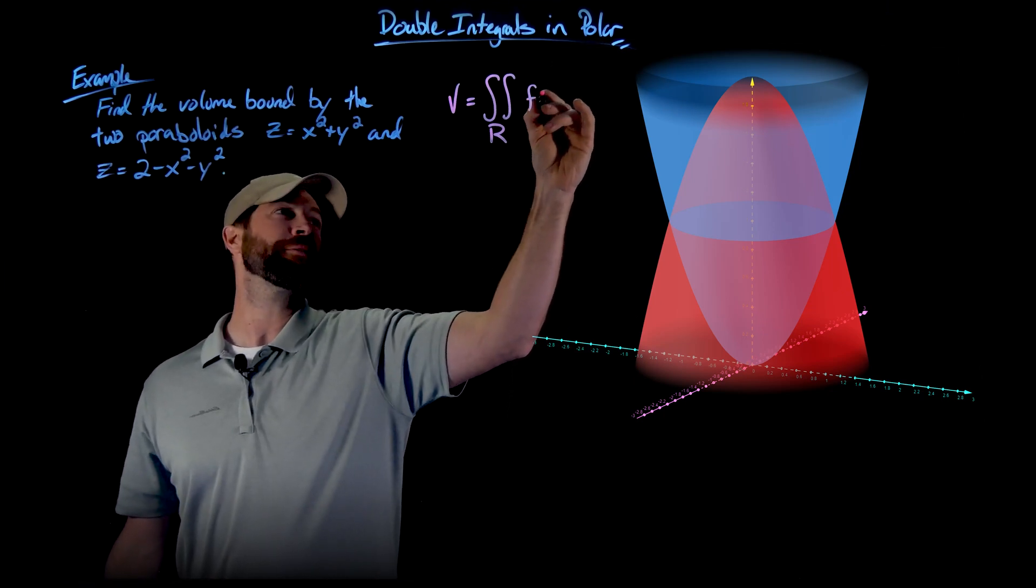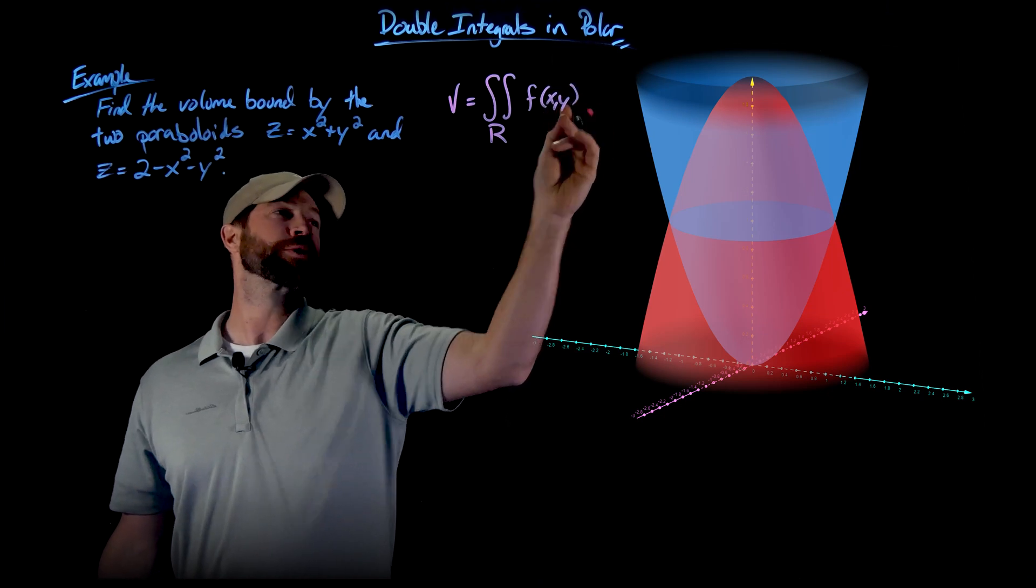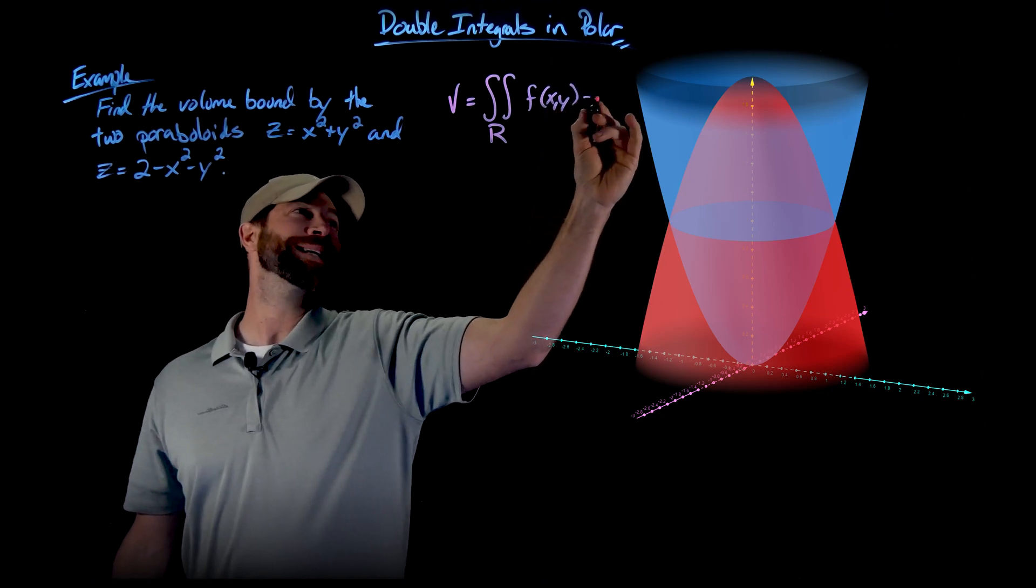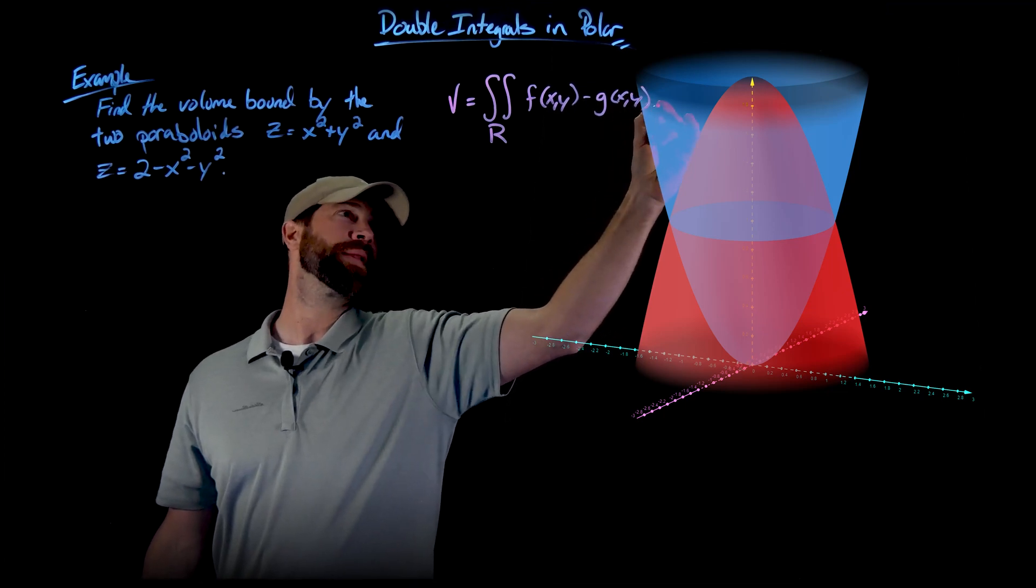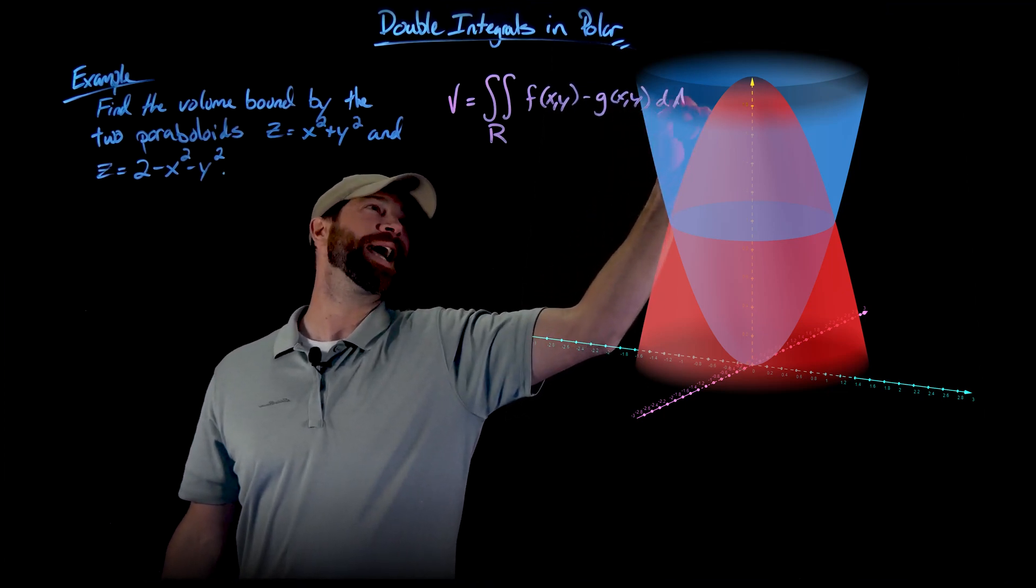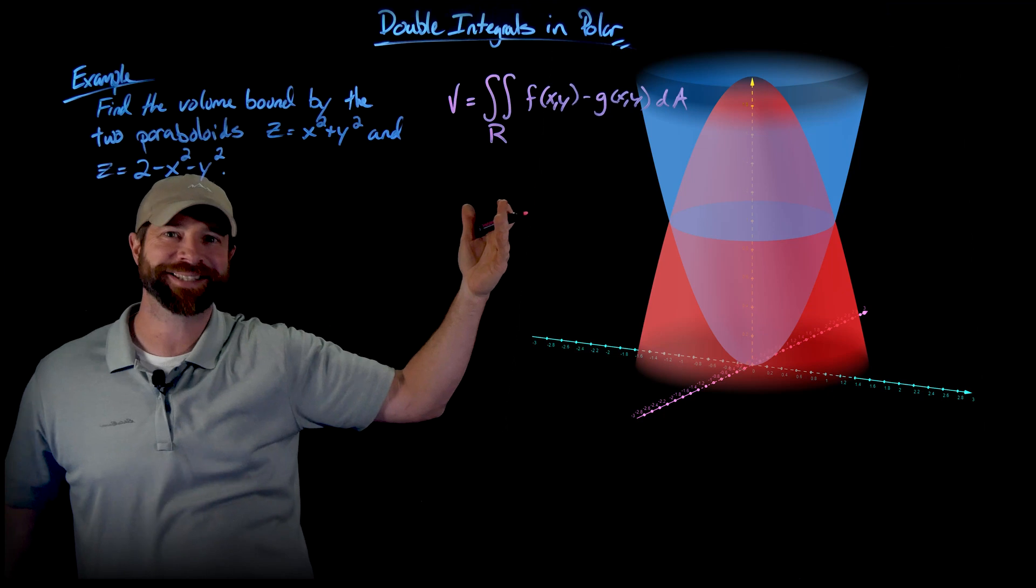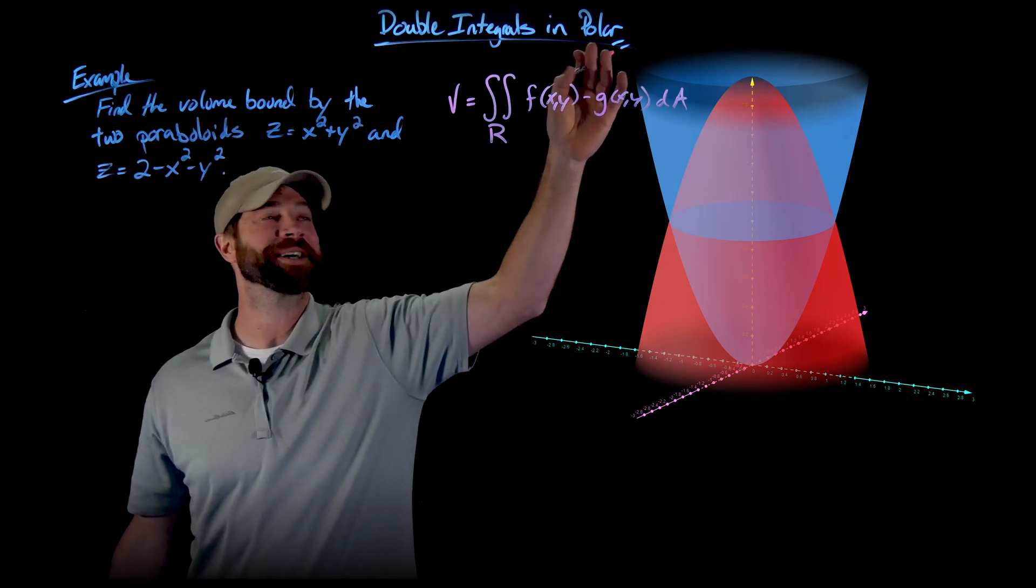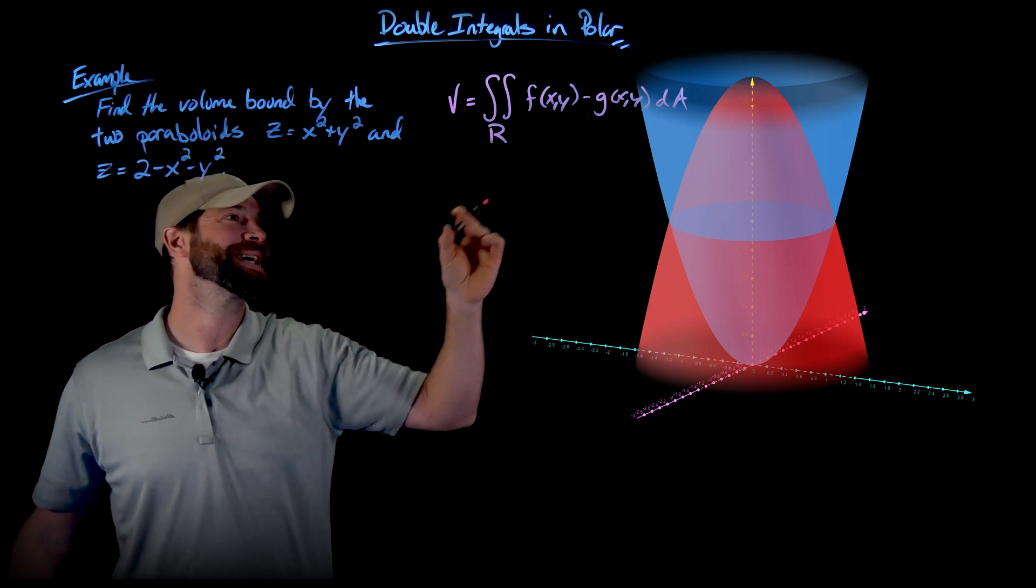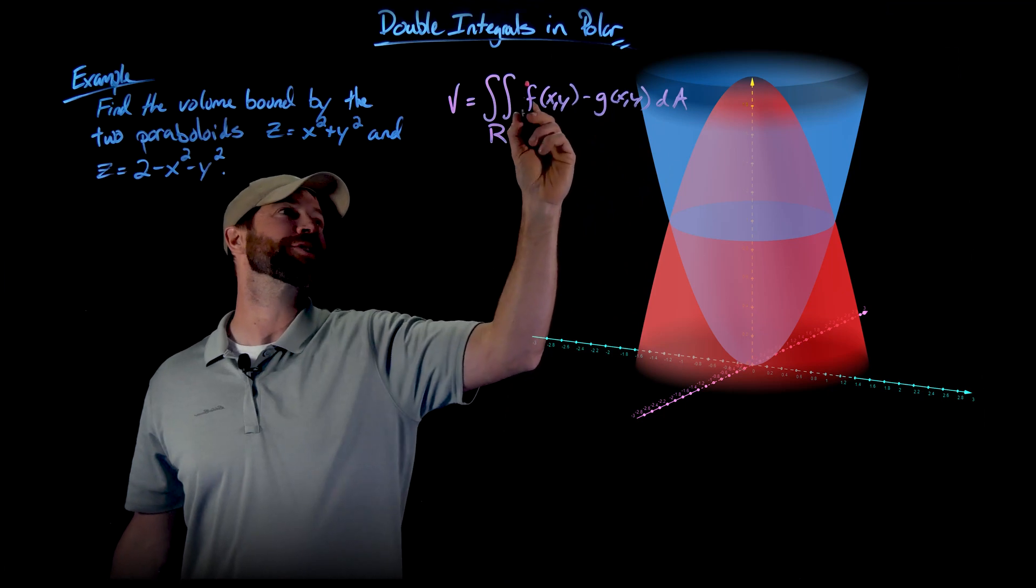...where we have f(x,y) which will be the upper function minus g(x,y), and then dA. Actually I'm going to do this in polar, so I'm just going to say dA right there generally.